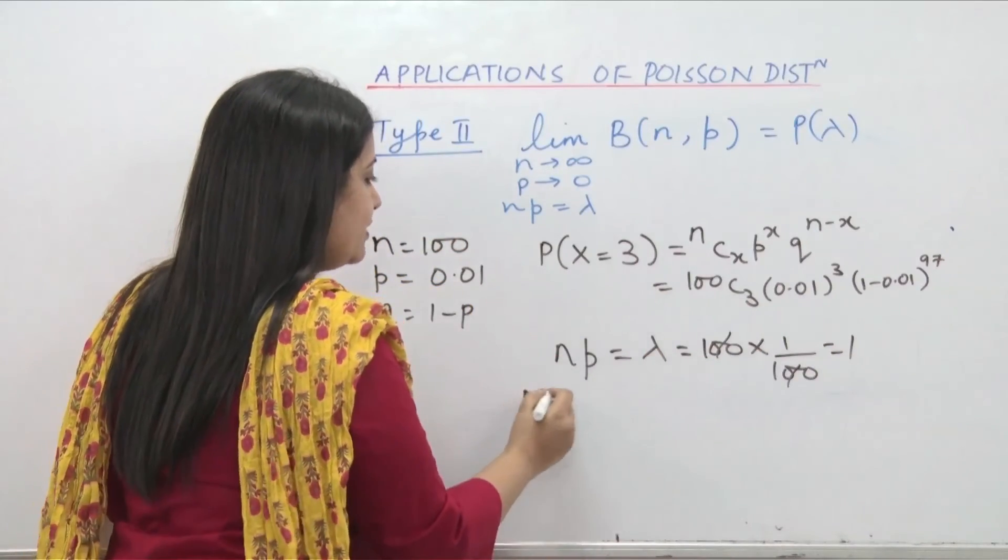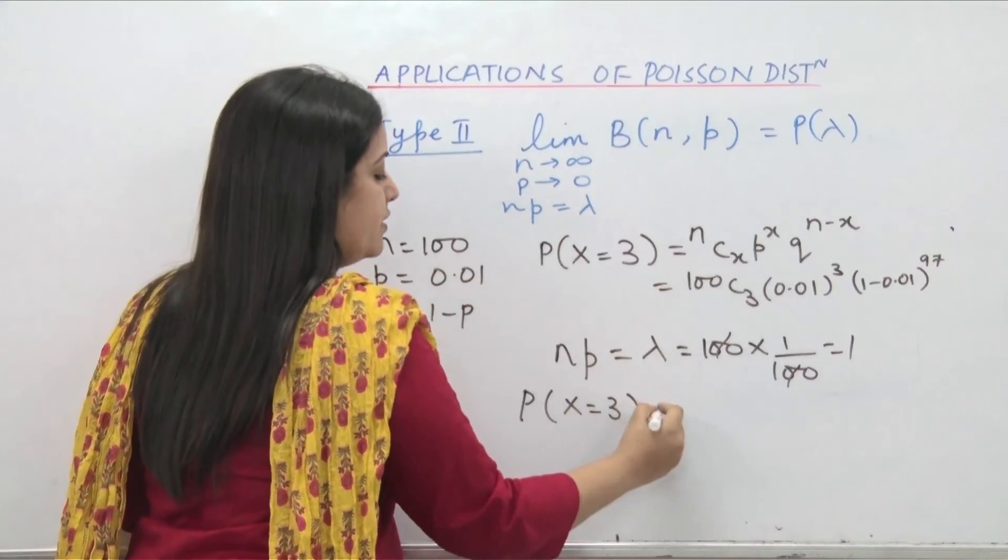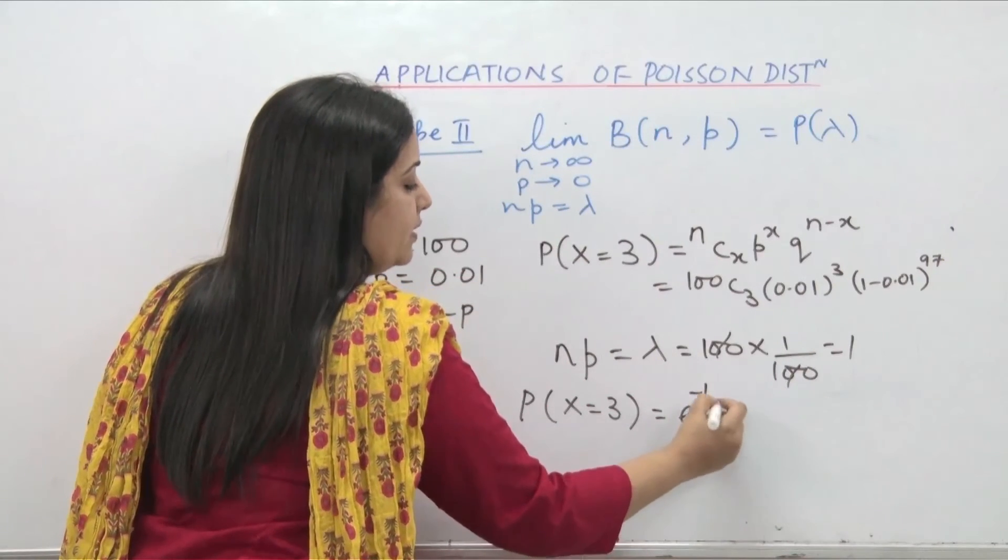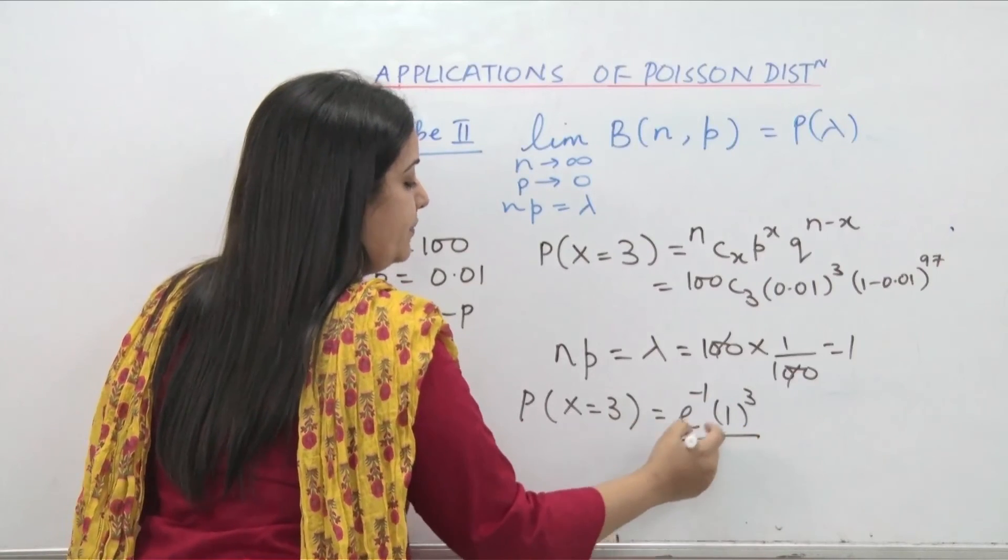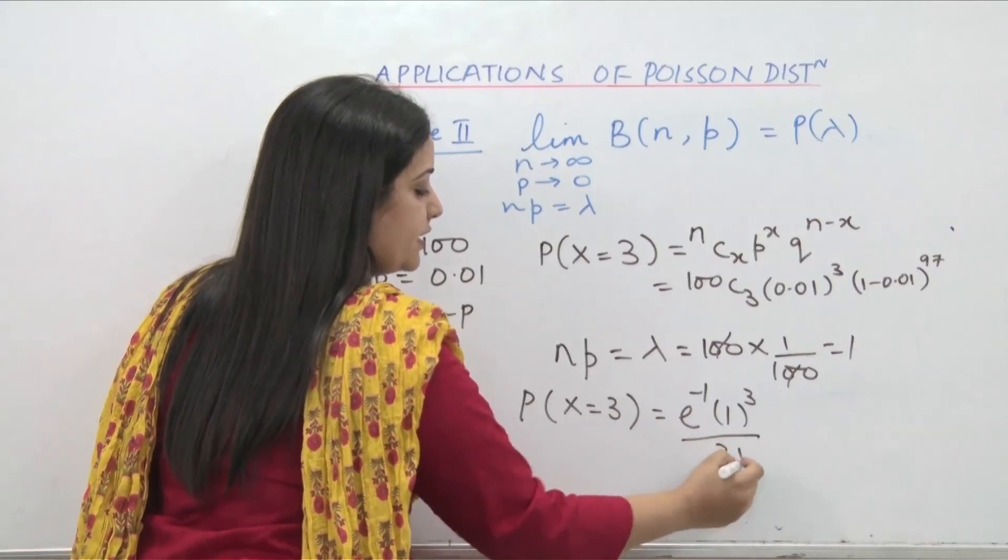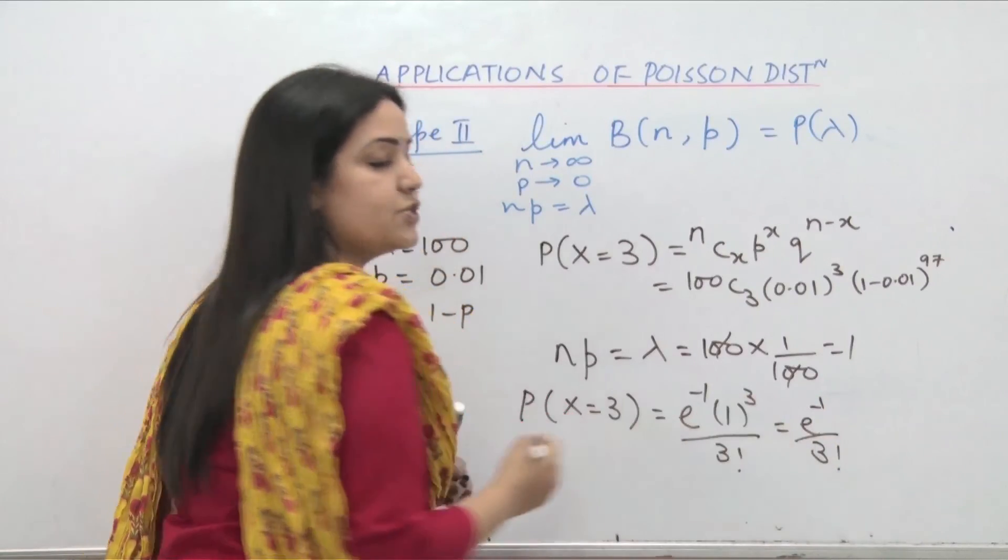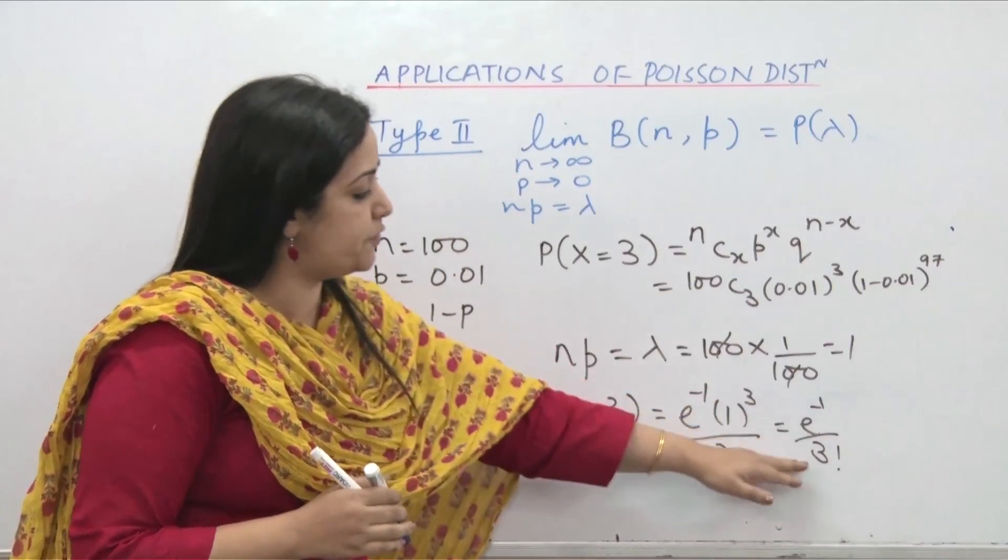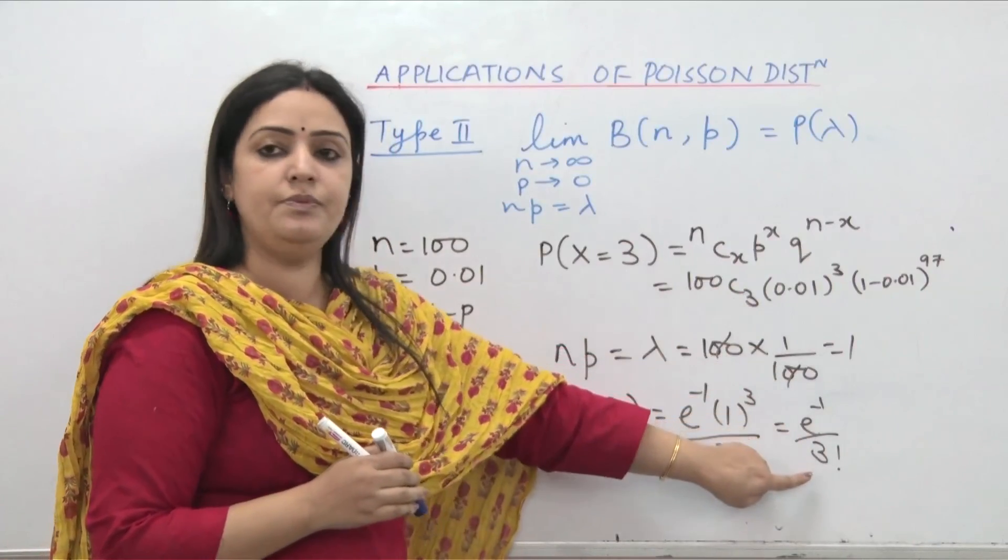So in order to calculate probability x equal to 3 we utilize the fxx of Poisson distribution which is e to the power minus lambda. Lambda to the power of x which is 3 in this case upon x factorial which is 3 factorial. So it is as simple as e to the power minus 1 upon 3 factorial. So type 2 ends by looking at the difference it will make if you were to calculate this as compared to this.